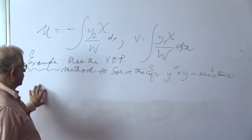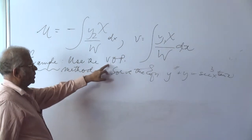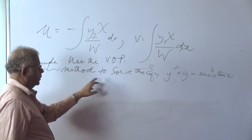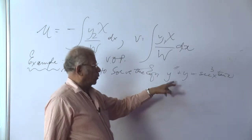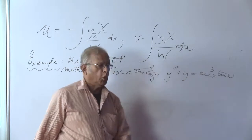To see how the process works, we put up an example on the board and the problem that we are going to do is use the variation of parameters method to solve the equation y double prime plus y is equal to sec cube x tan x.